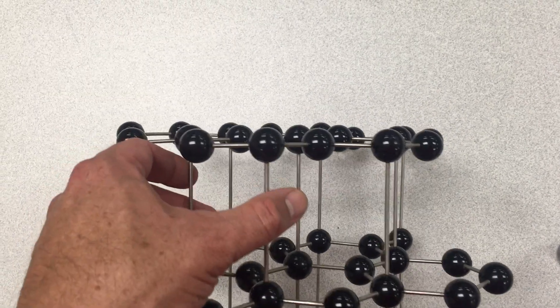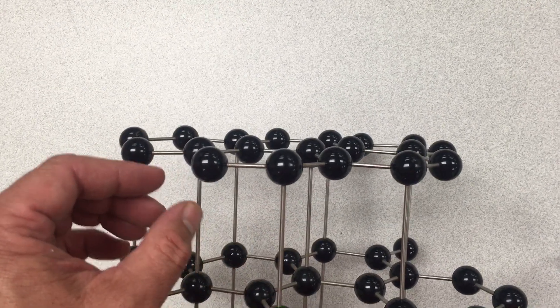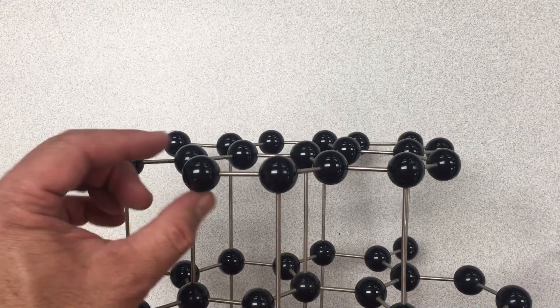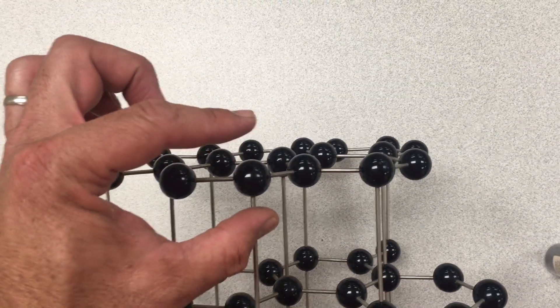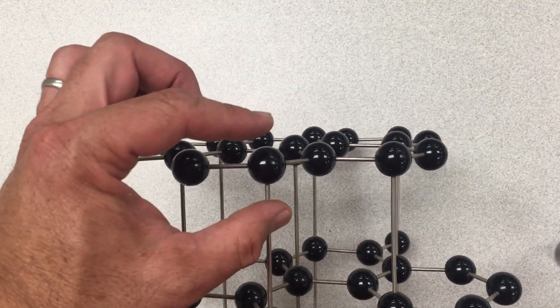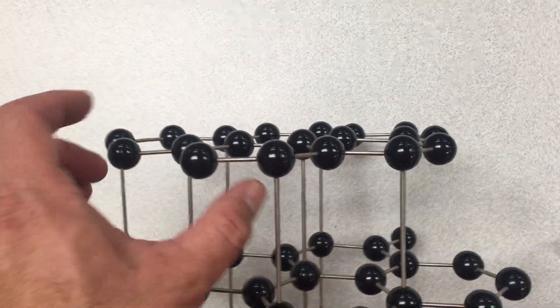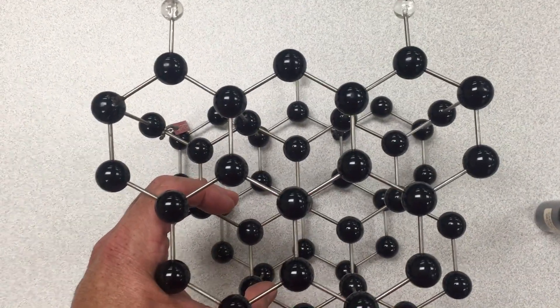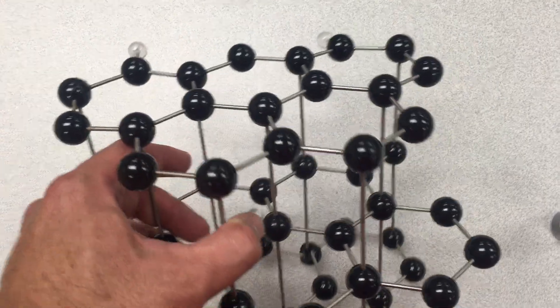And the p-orbitals that are not involved in the hybridization that come from the carbon stick out in and out of the plane of the graphite layers. And this helps enable graphite to actually be a pretty good conductor of electricity.